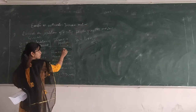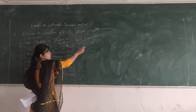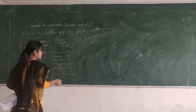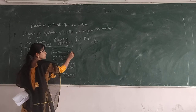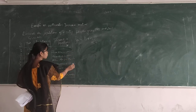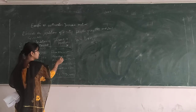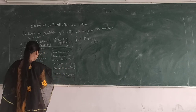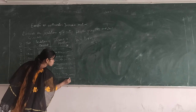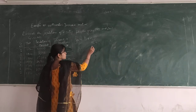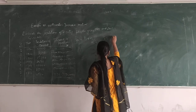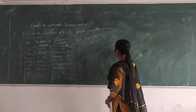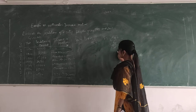x̄ is the average incremental population. It is calculated by summing all the increments and dividing by the number of intervals. The summation of all increments is 39,000, and dividing by 6 gives x̄ = 39,000 ÷ 6 = 6,500. This is the value of x̄.